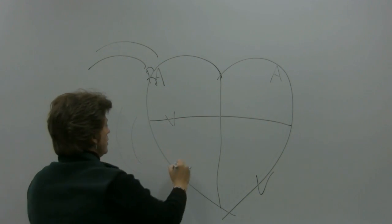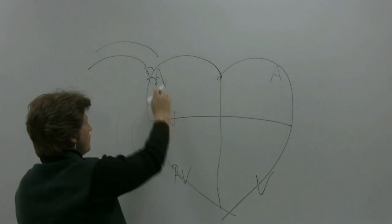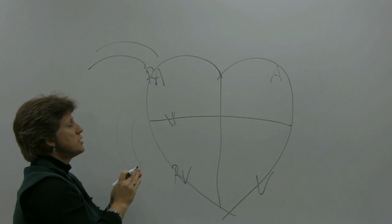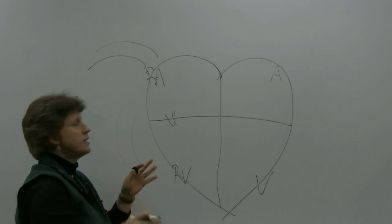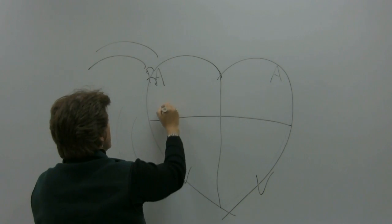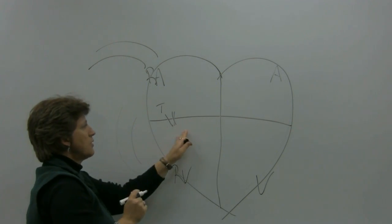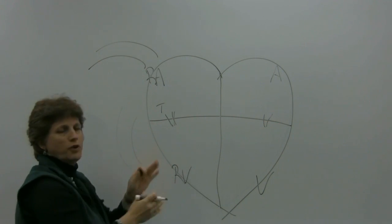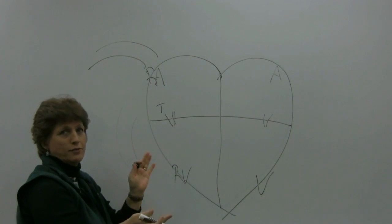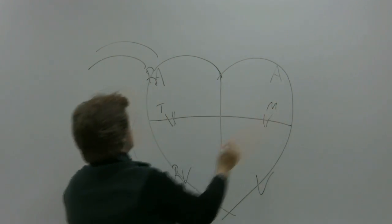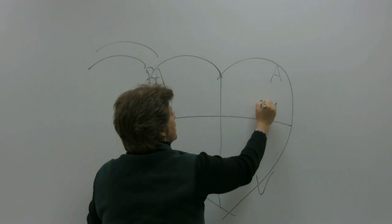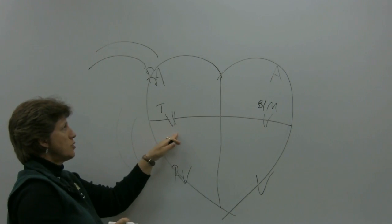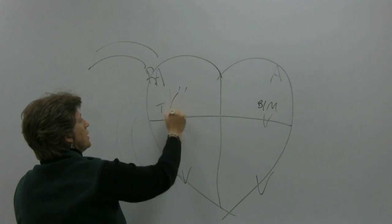Once the blood gets into the right side of the heart, it has to go through a valve to get into the right ventricle. There are four different valves to memorize. The tricuspid valve is on the right side, and the mitral valve — also called the bicuspid valve — is on the left side.